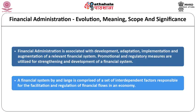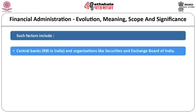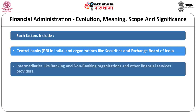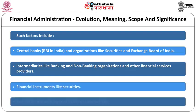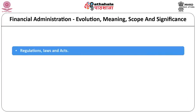Factors affecting regulation of financial flows: Central banks, i.e. RBI — Reserve Bank of India — and organizations like Securities and Exchange Board of India. Intermediaries like banking and non-banking organizations and other financial services providers. Financial instruments like securities, facilitators like exchange of stocks or commodities, regulations, laws, and acts.